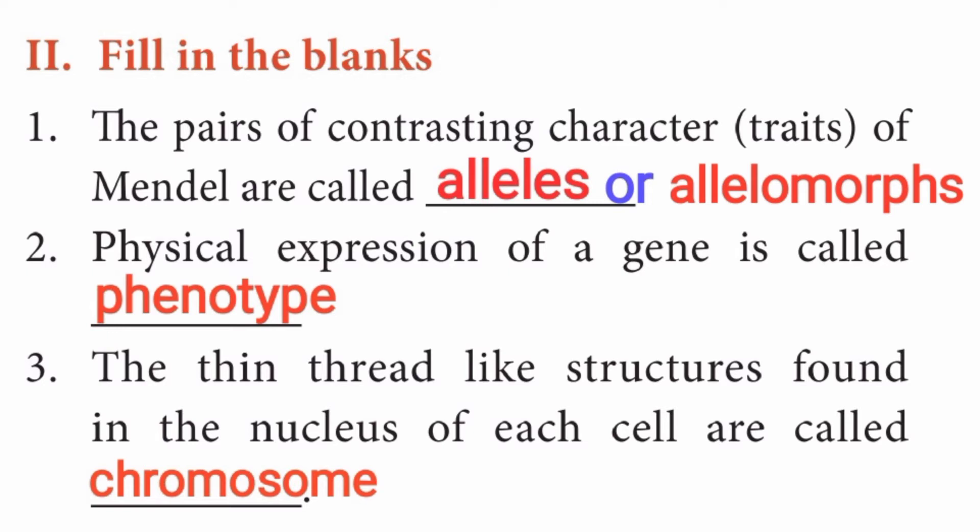Third question: the thin thread-like structures found in the nucleus of each cell are called dash. Answer is: chromosomes. The thin thread-like structures found in the nucleus of each cell are called chromosomes.